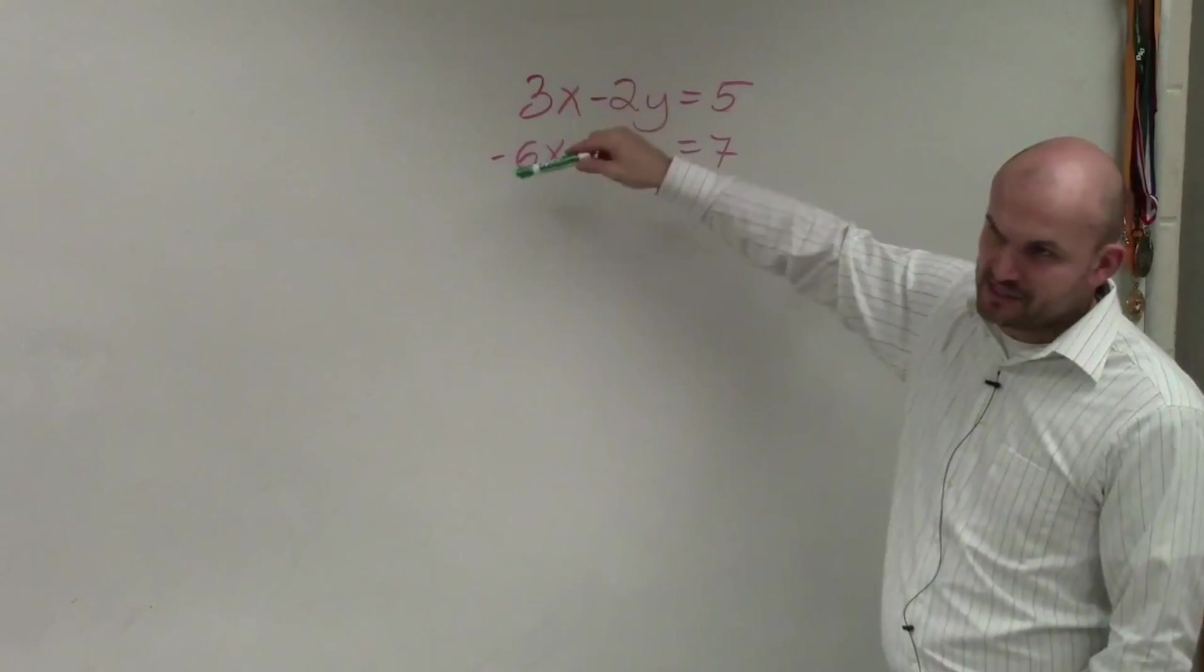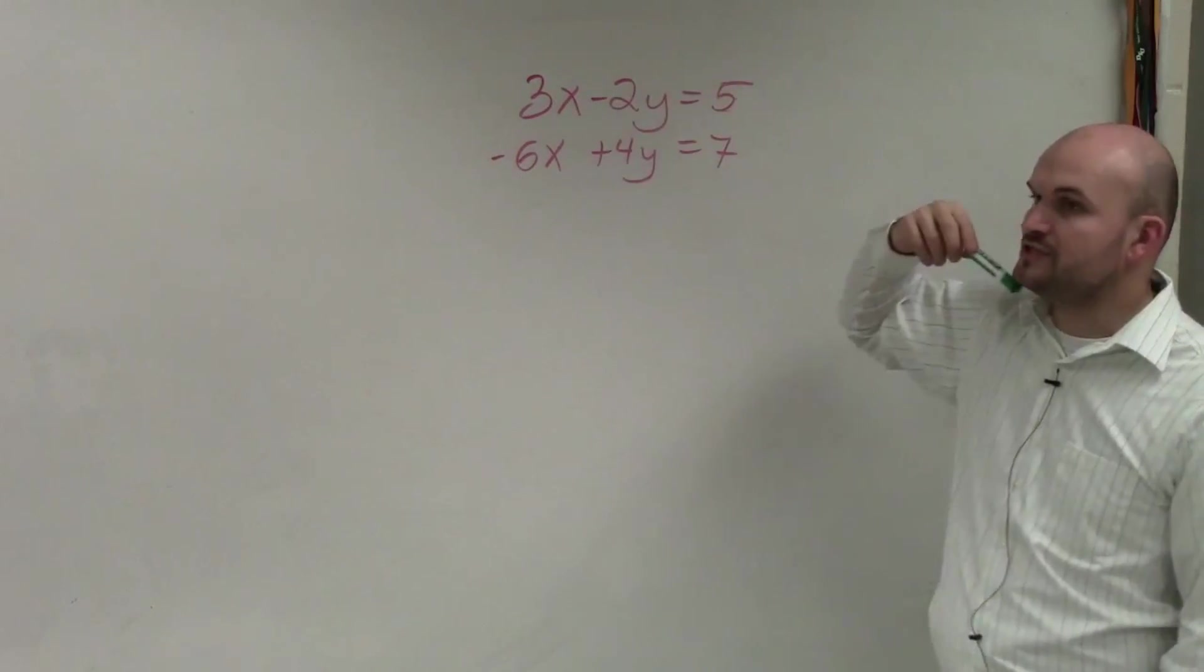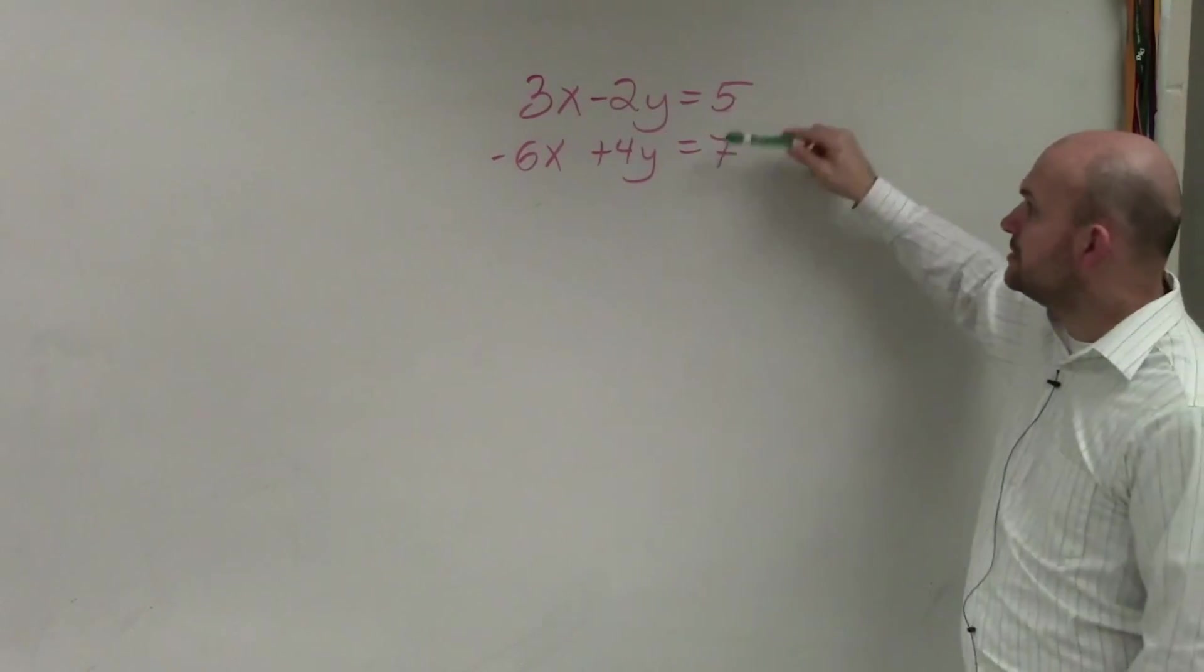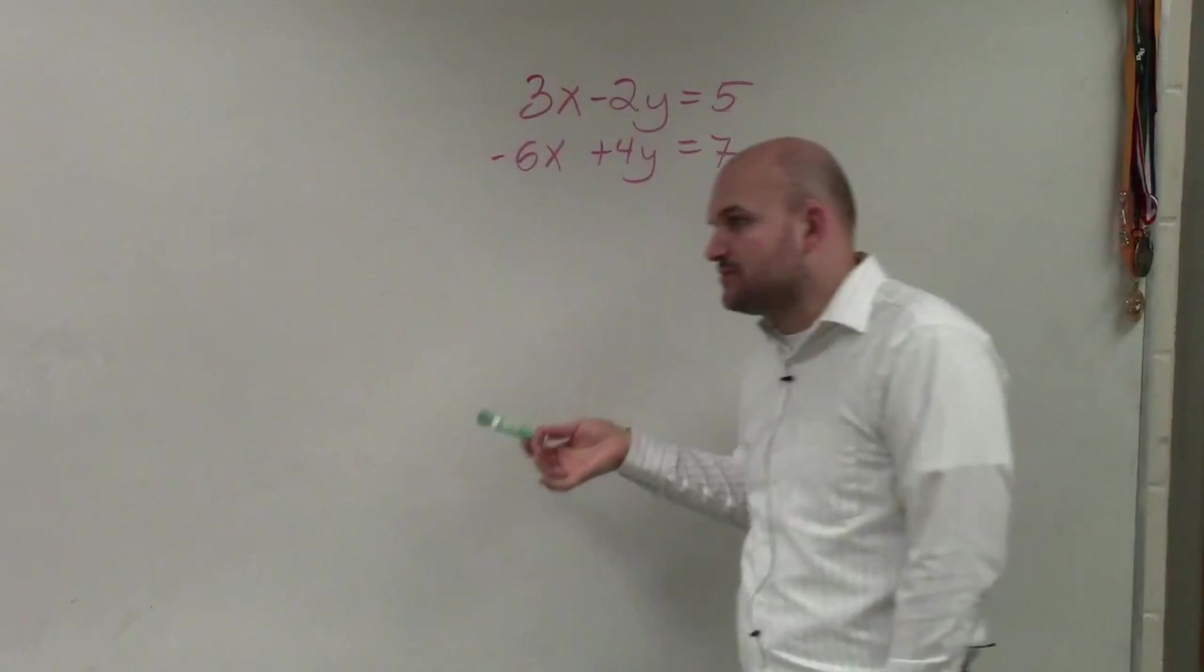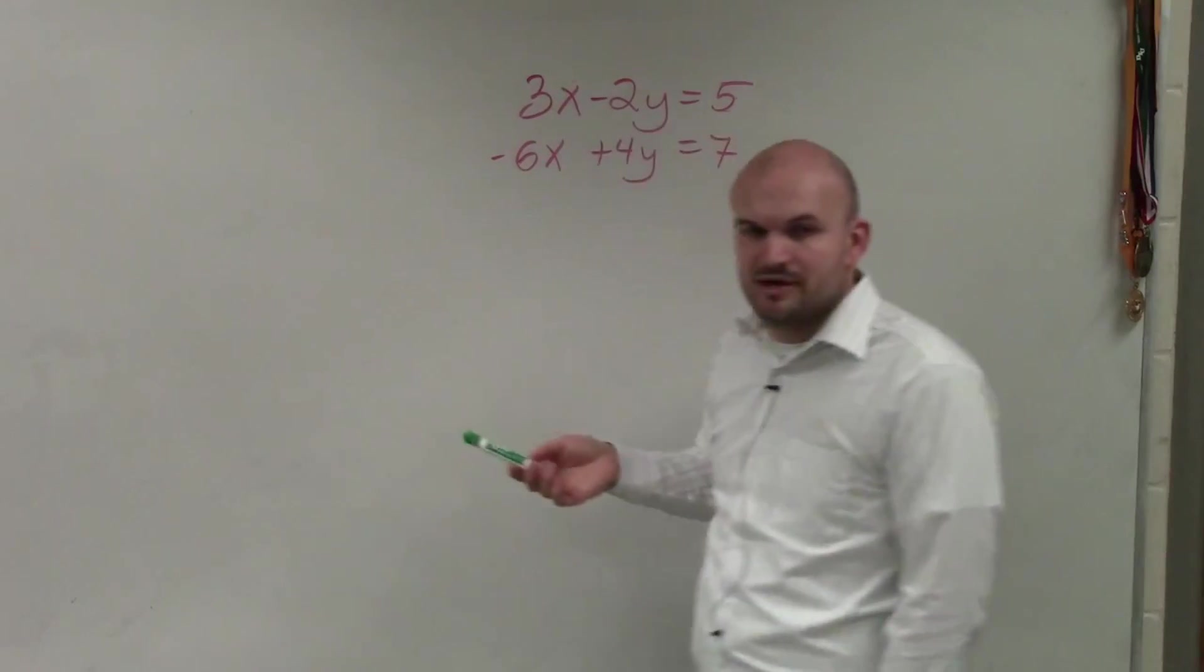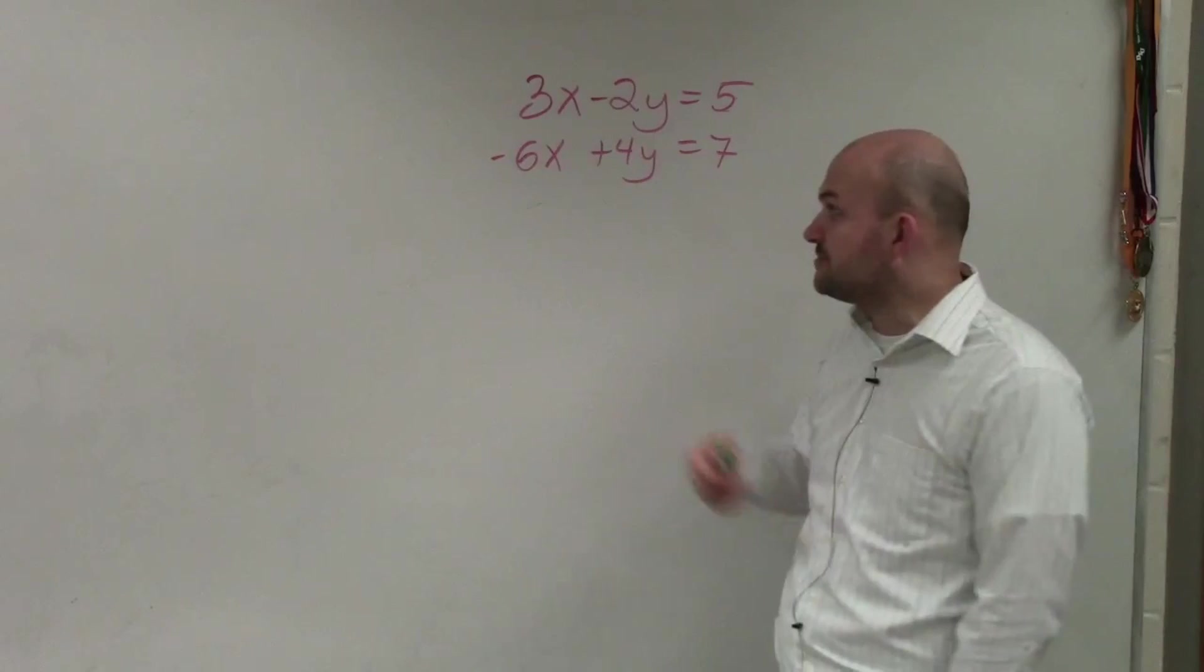Then I look at the coefficients of the variables to see if they're the same. Well, the coefficients of x's aren't the same, nor are the coefficients of the y the same. So I need to say, all right, well, which one, does it matter which one is going to have the smaller coefficient or the least common multiple?